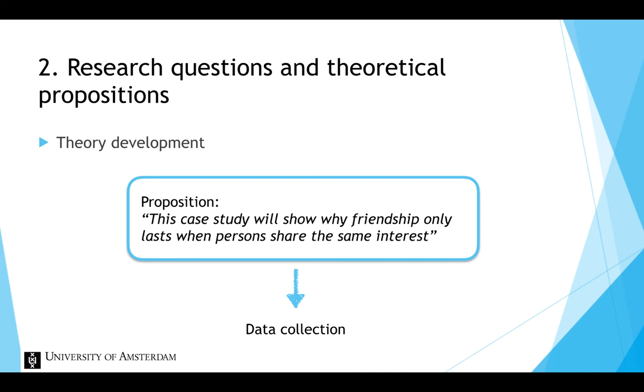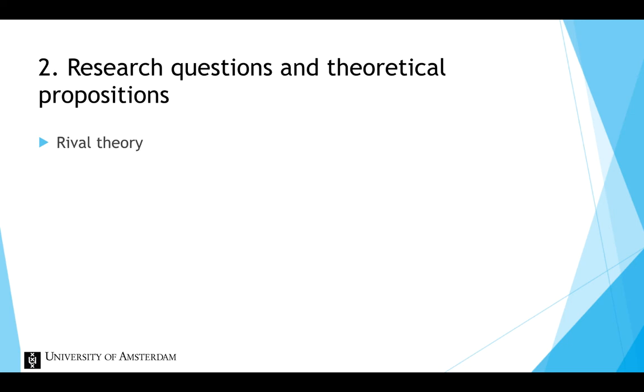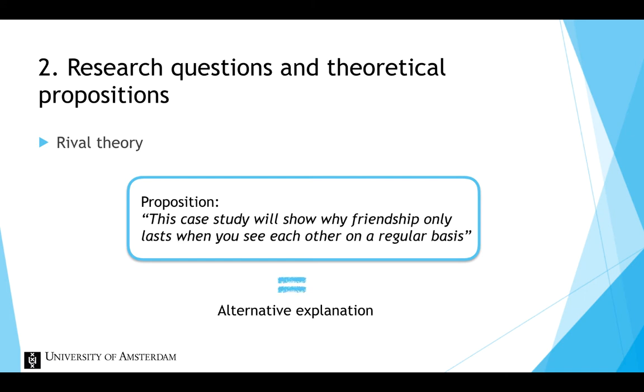A theoretical proposition can also present the nutshell of a rival theory. Propositions of a rival theory are alternative explanations. In other words, a rival theory is an attempt to explain the same outcome, but with a different substantive theory.